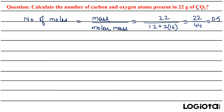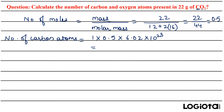After this step, we need to calculate the number of carbon atoms as well as oxygen atoms. To calculate the number of carbon atoms, you can see there is no subscript with carbon in the formula of CO₂, so X is 1. Therefore: 1 × 0.5 moles × 6.02 × 10²³, which gives an answer of 3.01 × 10²³. This is the number of carbon atoms.